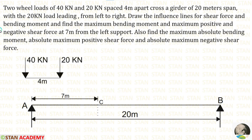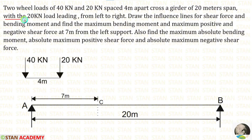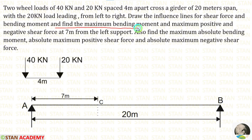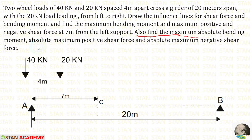Hello everyone. Today we are going to do a problem based on influence line diagrams. Let us read the question one time. Two wheel loads of 40 kN and 20 kN spaced 4 meters apart cross a shear girder of 20 meter span with the 20 kN load leading. Draw the influence lines for shear force and bending moment, and find the maximum bending moment and maximum positive and negative shear force at 7 meters from the left support. Also find the maximum absolute bending moment, absolute maximum positive shear force and absolute maximum negative shear force.